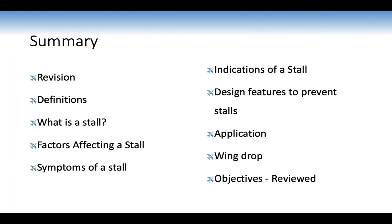Summary: we looked at revision from effects of controls, straight level and turning brief, and a lot of definitions — stall, critical angle of attack, laminar flow, turbulent flow, separation point, symptoms, and spin. We looked at what is a stall, expanded on our definitions, and the factors affecting a stall — physical factors such as wind, weight, flaps, centre of gravity, and power. We looked at symptoms of the stall and indications. We looked at design features such as wing washout and stall strip. Make sure you read up in the student air training manual.